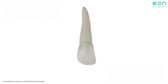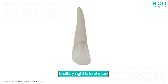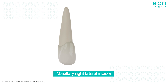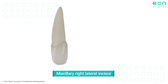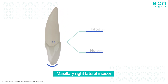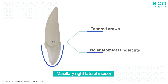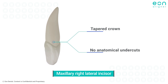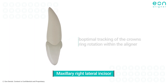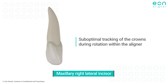An additional aspect concerning the morphology of the lateral incisors pertains to their tapered crown and the absence of anatomical undercuts that could effectively engage pushing vectors of force. Consequently, this often leads to suboptimal tracking of the crowns during rotation within the aligner, resulting in an incomplete correction.